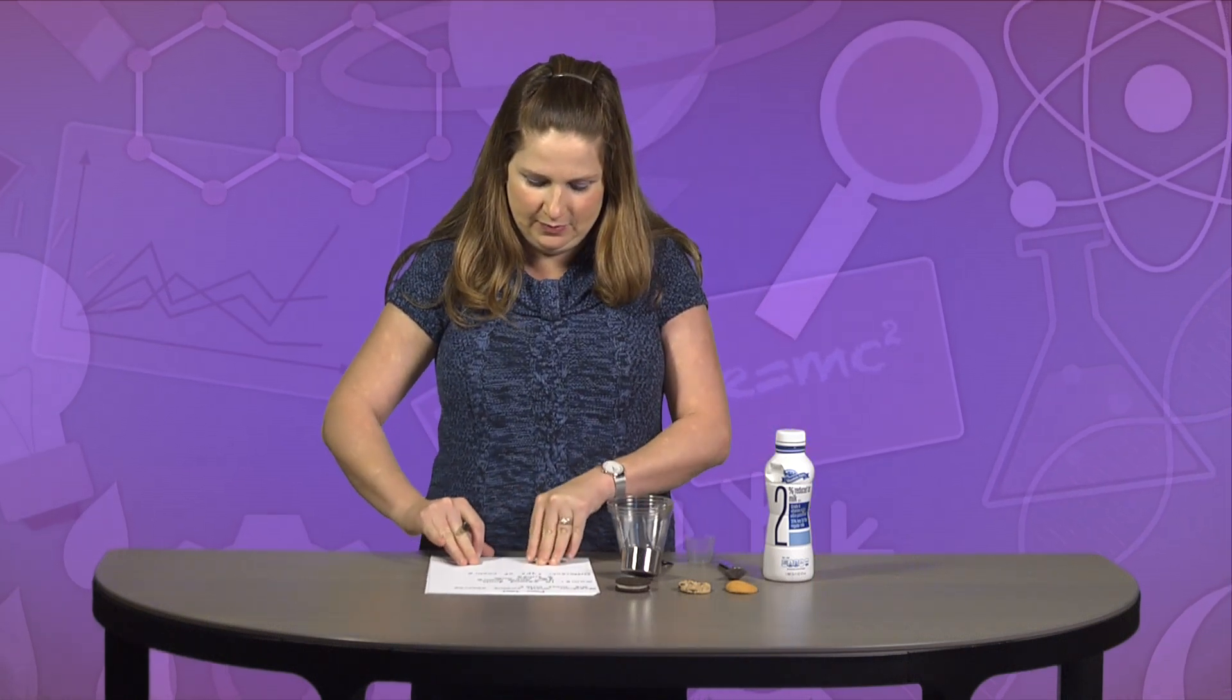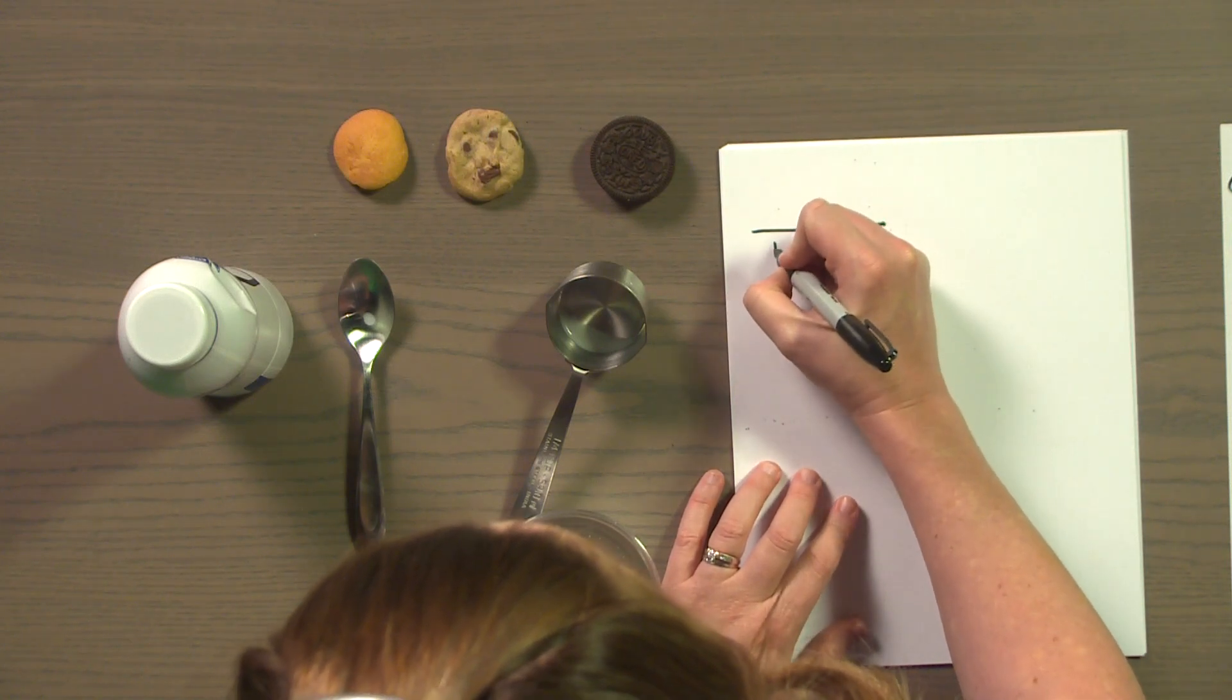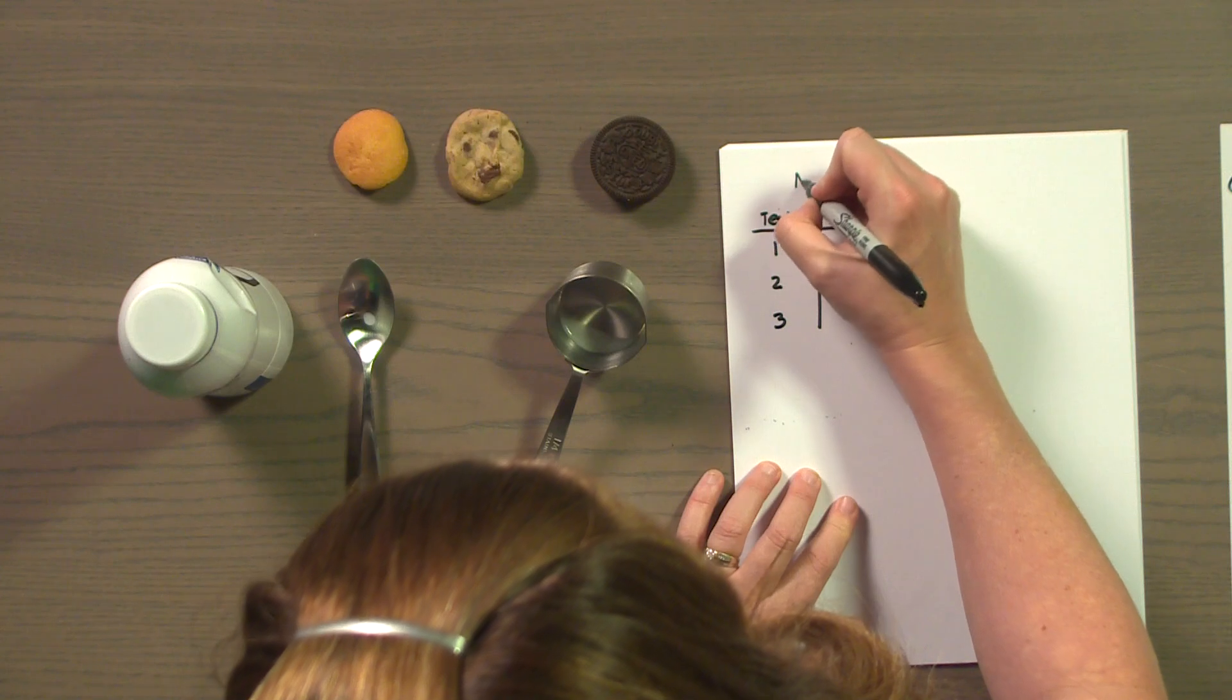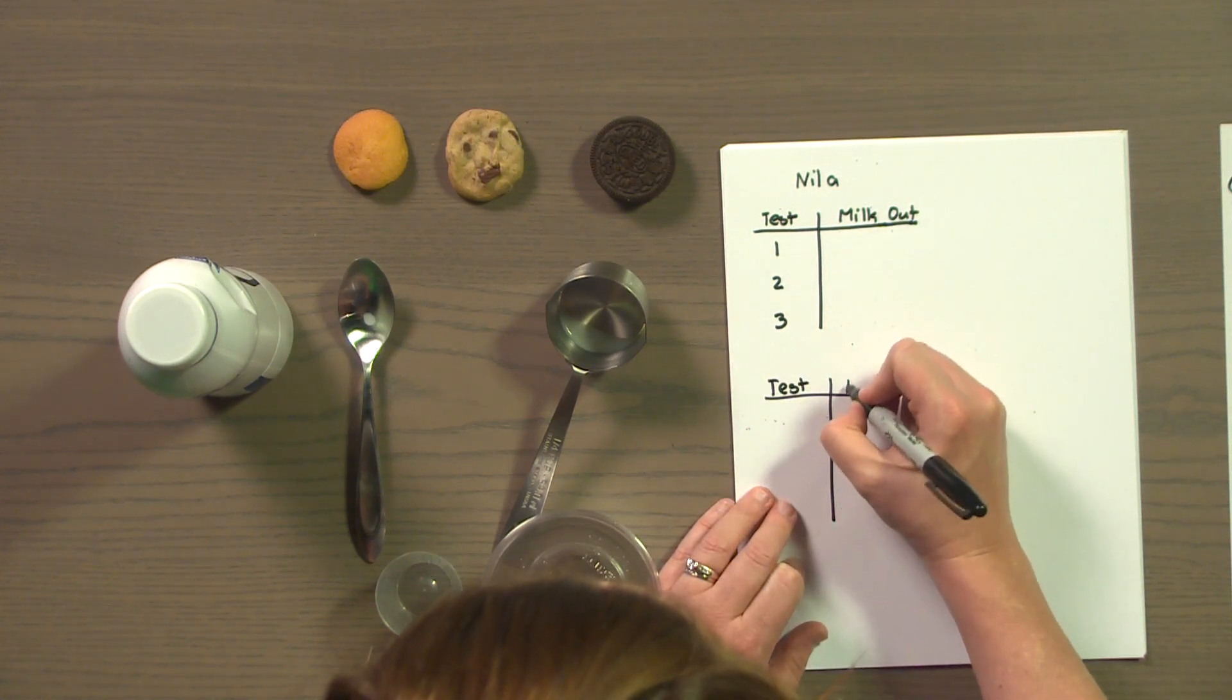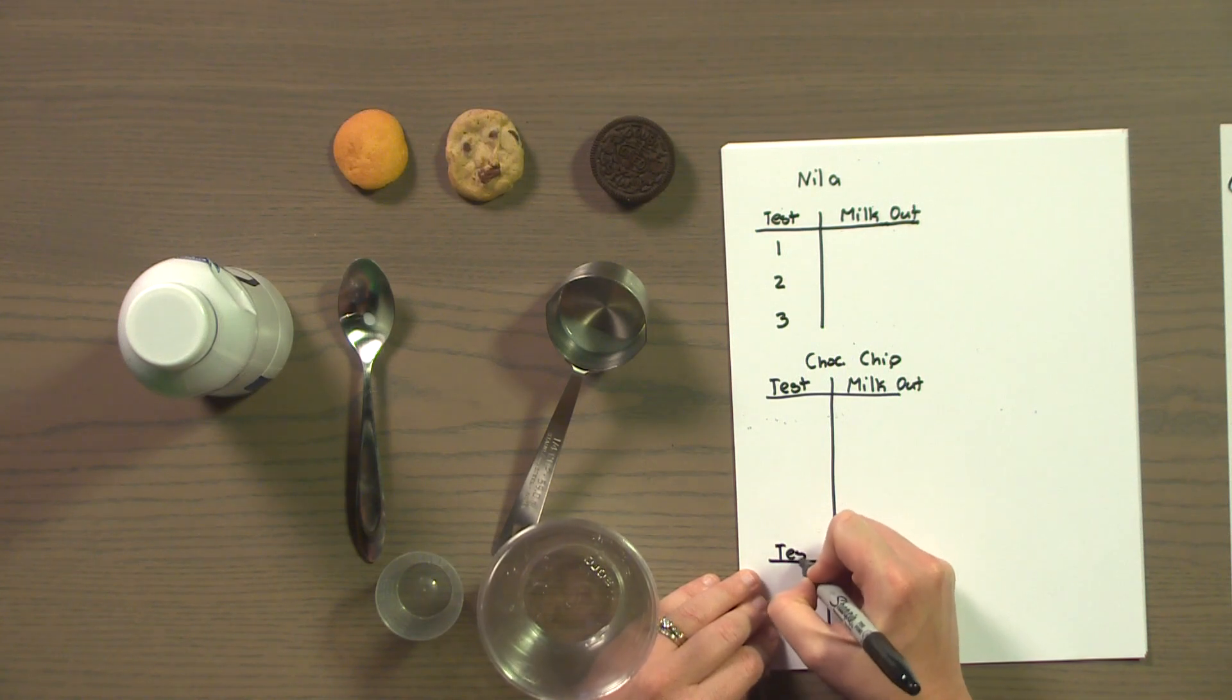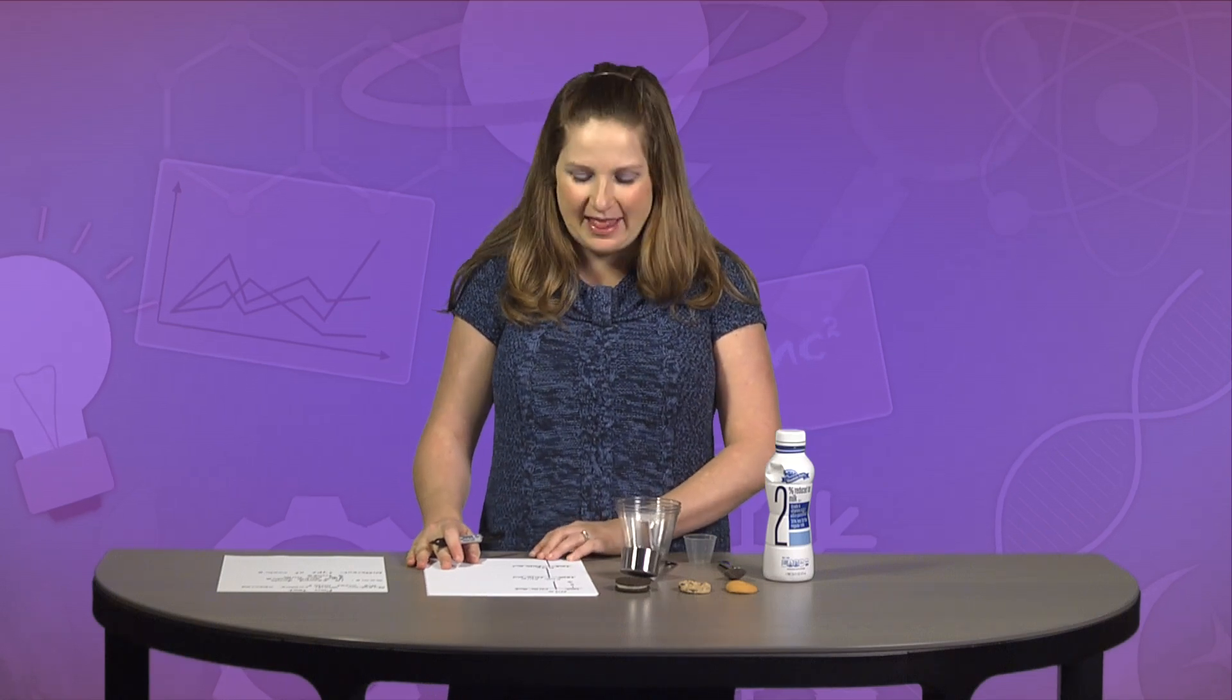Last thing we need to plan is how we're going to record the results. We'll use a different t-chart for each cookie. Go ahead and make the t-charts along with me so we can record the results together. So, for my t-chart, I need test 1, 2, and 3, and milk. This one will be the Nilla. Label the test number and how much milk comes out. This one will be the chocolate chip. And then last, test number and milk out for the Oreo. Your t-chart should look something like this and then that way we can record our results.